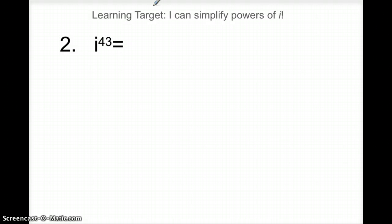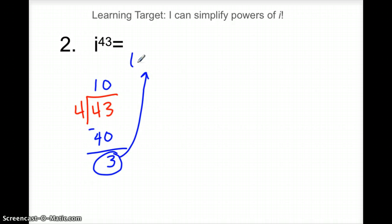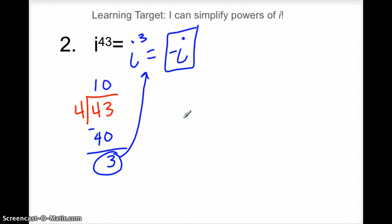Let's try i to the 43rd. We do the exact same thing — divide by four. Four goes in ten times, and that would be 40. I have a remainder of three. So since my remainder is three, I can say i to the 43rd is equivalent to i cubed, which is really just negative i, based on those four things we need to memorize.